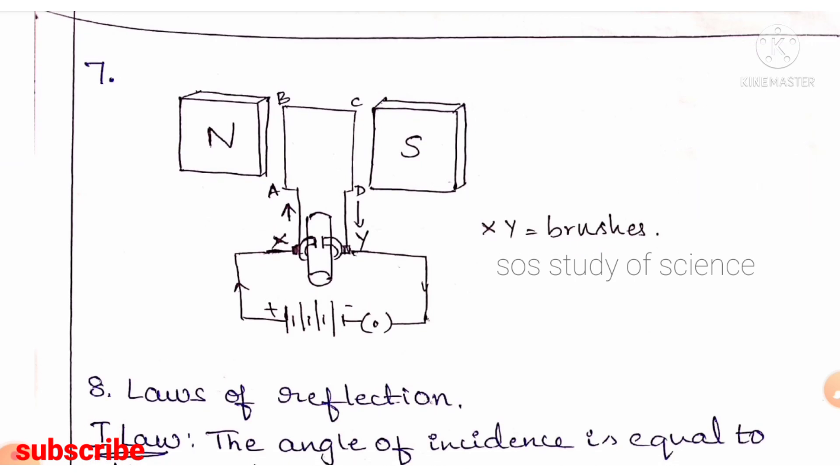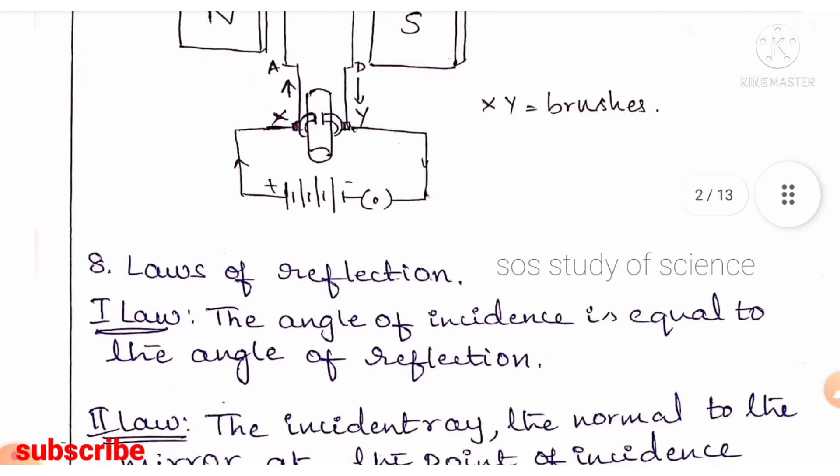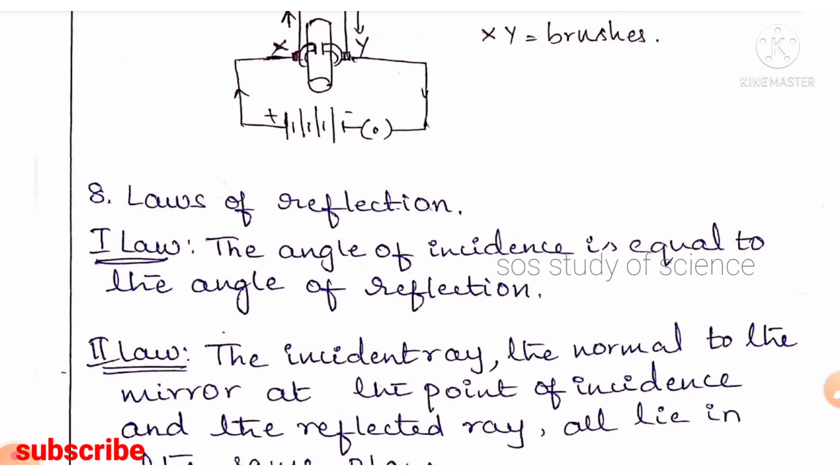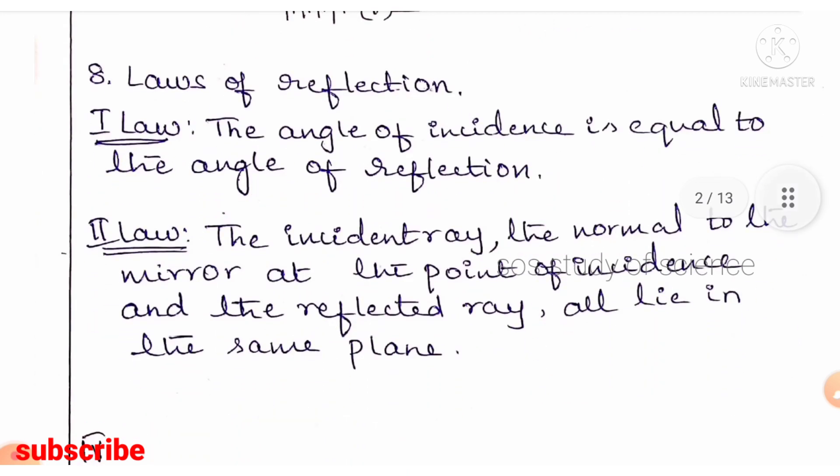Seventh MCQ: it is an electric motor — electric motor or generator must be practiced. Eighth: laws of reflection. First law: angle of incidence equals angle of reflection. Second law: the incident ray, normal to the mirror at the point of incidence, and the reflected ray all lie in the same plane.